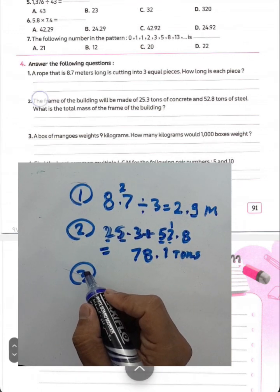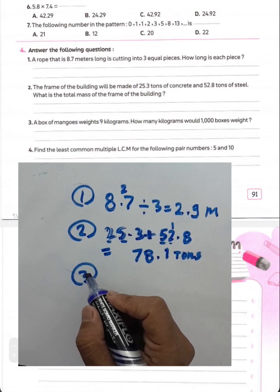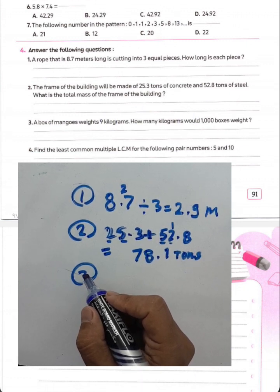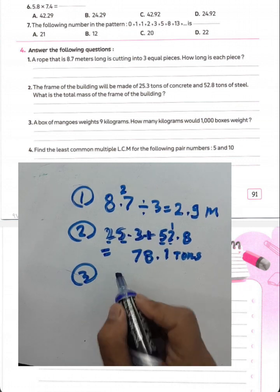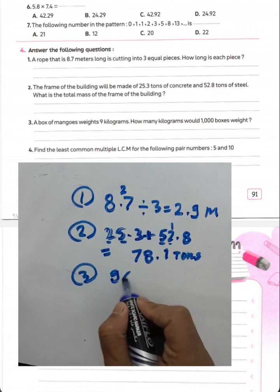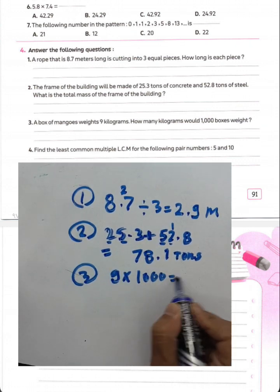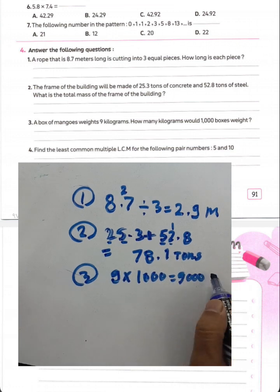Question number three: a box of mangoes weighs 9 kilograms. How many kilograms would 1,000 boxes weigh? Multiply 9 times 1,000. The result is 9,000 kilograms.